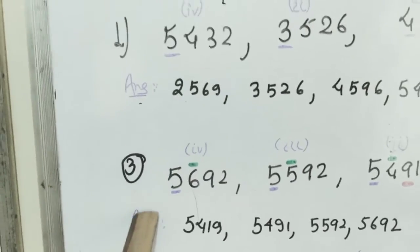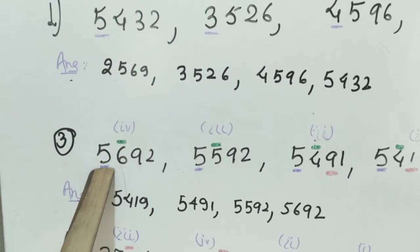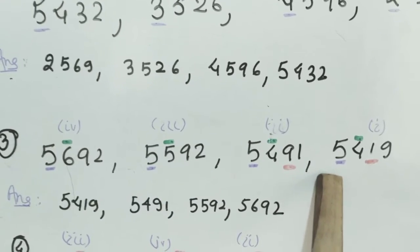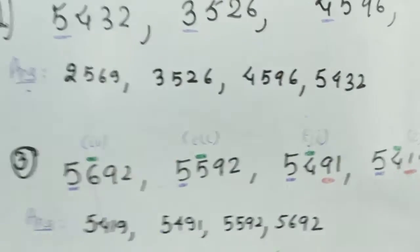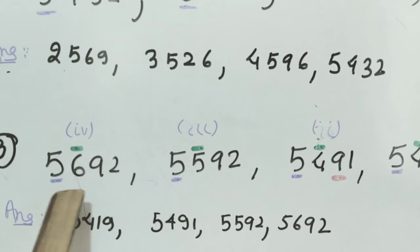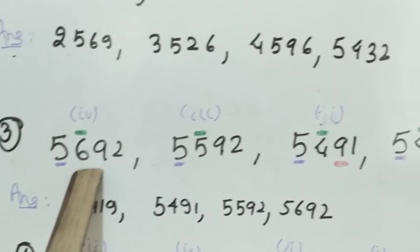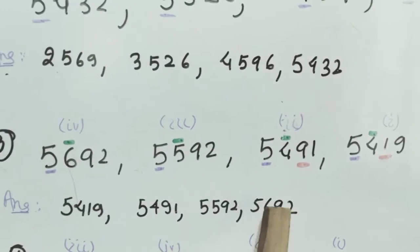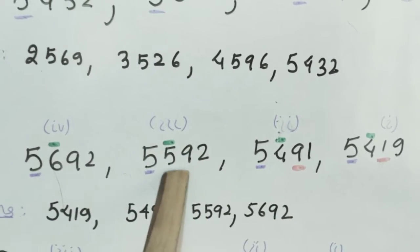Question number 3 is an interesting question. We see that at the 1000 place, in all the cases, the digit is the same — that is 5. So let us compare the numbers at the 100 place. Here it is 6, here it is 5. So we can conclude that this one is the largest number in this series. We put it at the last place, and prior to this number, we put it here.